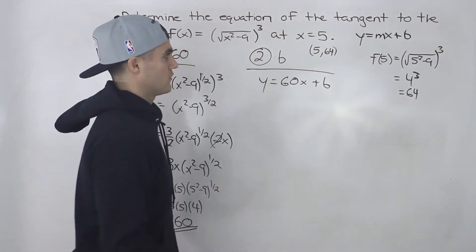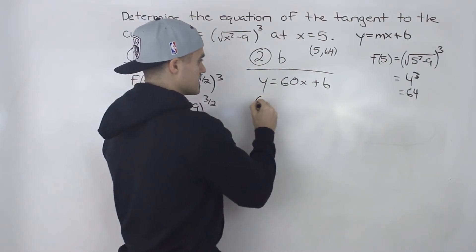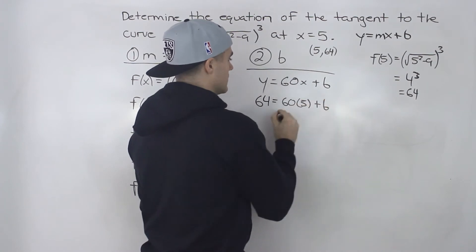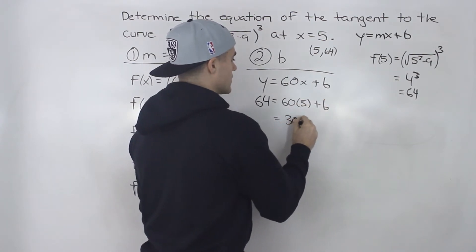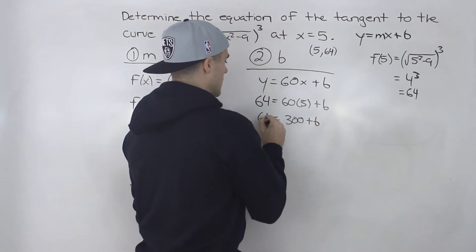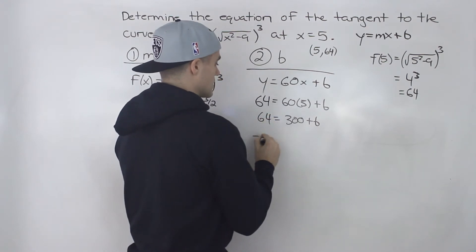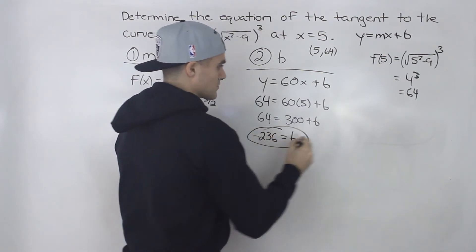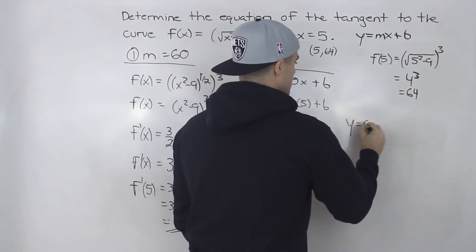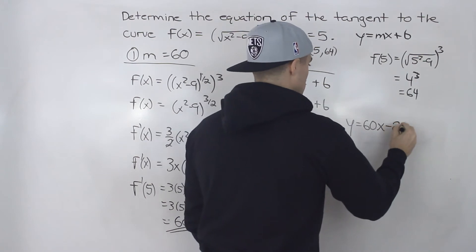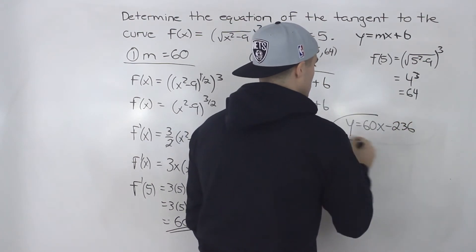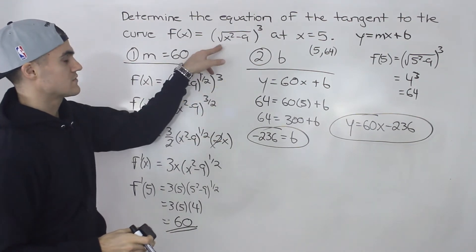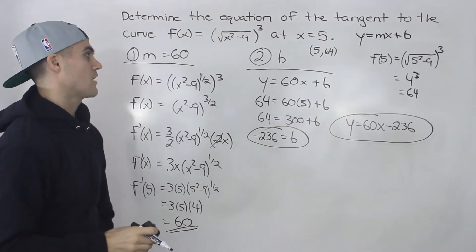Plugging in the point (5, 64): 64 equals 60 times 5 plus b. 60 times 5 is 300. So 64 minus 300 gives us b equals negative 236. Our final equation is y equals 60x minus 236. That is the equation of the tangent line on this function at an x value of 5.